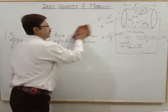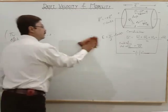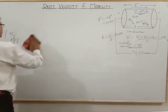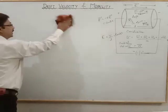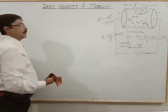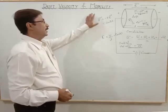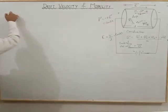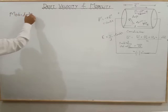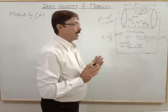Now we will understand what mobility is. We have learned what drift velocity is — the average velocity of electrons moving against the electric field. Now what about mobility? Mobility is represented by the symbol mu (μ).